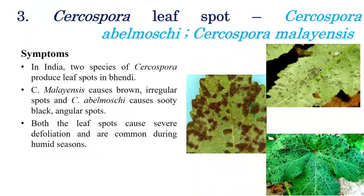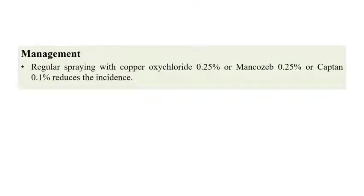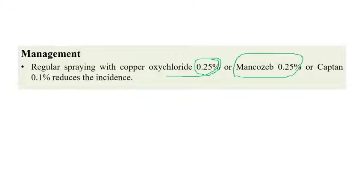For management of Cercospora leaf spot, regular spraying with copper oxychloride at 0.25 percent, or application of mancozeb at 0.25 percent, or captan at 0.1 percent can reduce the incidence of this disease.